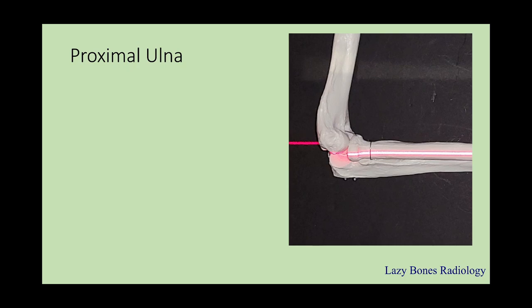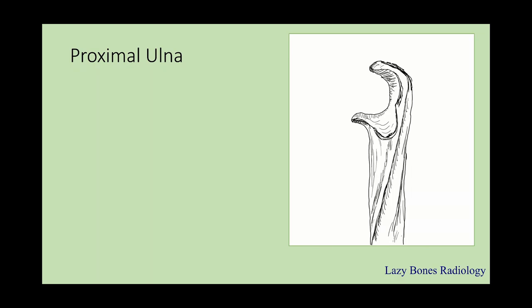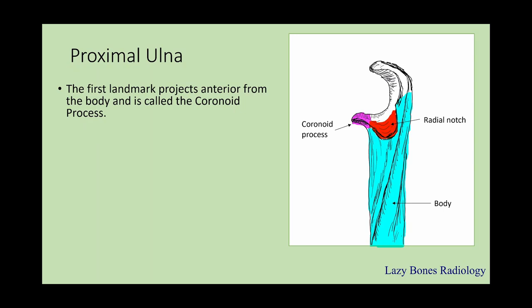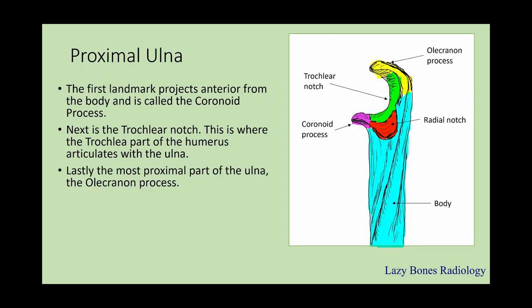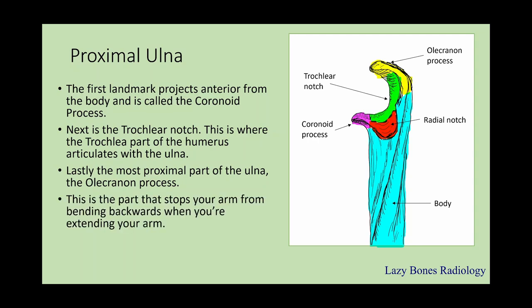Now let's talk about the proximal ulna. The ulnar body makes the majority of the long bone. The radial notch is where the radial head articulates primarily with the proximal part of the ulnar bone. The first landmark that projects anterior from the body is known as the coronoid process. Next is the trochlear notch — this is where the trochlear part of the humerus articulates with the ulna. Lastly, the most proximal part of the ulna is known as the olecranon process, which stops the arm from bending backwards when extending. Try not to confuse the coronoid and olecranon processes.